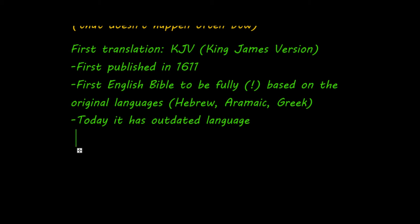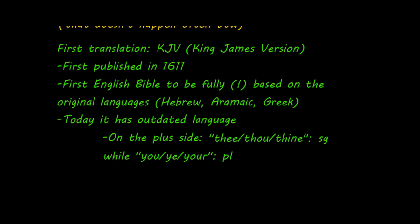It uses 'thee' and 'thou.' We don't like thee and thou, but thee, thou and also thine are singular. While on the other hand, you, ye and your are plural. And this does have a huge advantage when you compare it to only 'you' and 'your' in modern translations — with thee, thou, thine, and ye, you know whether it's singular or plural, and that's very handy at times.